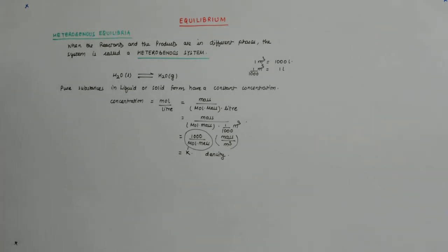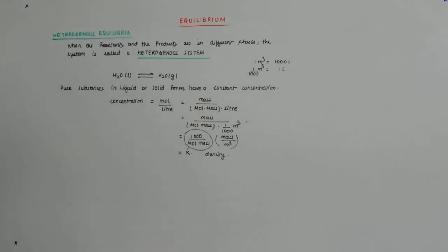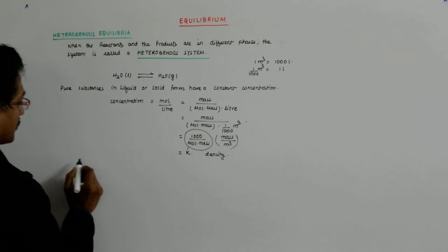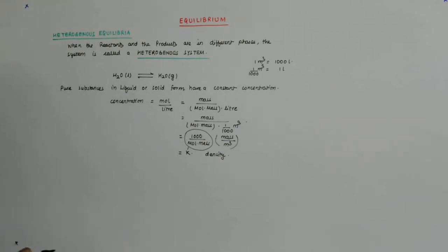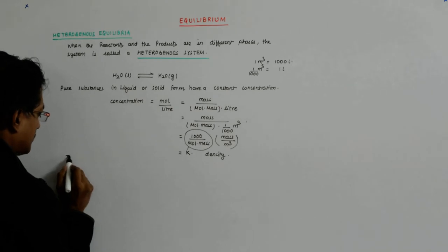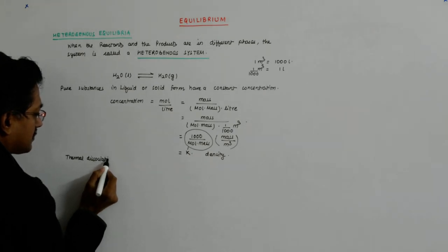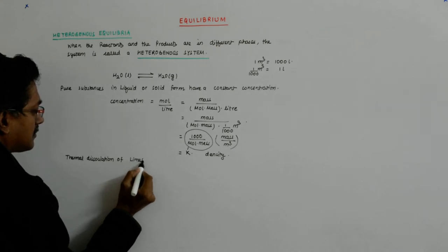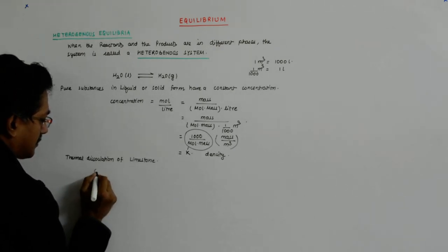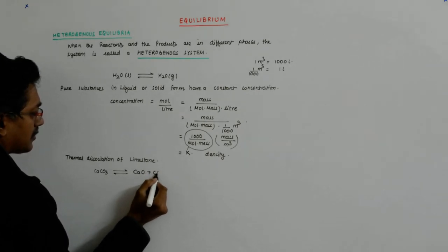If that is the case, I can find out the equilibrium constant for such a system. You must have heard of the cracking of calcium carbonate — the thermal dissociation of calcium carbonate, also called cracking of limestone. Calcium carbonate is limestone. It gives you CaO plus CO2.